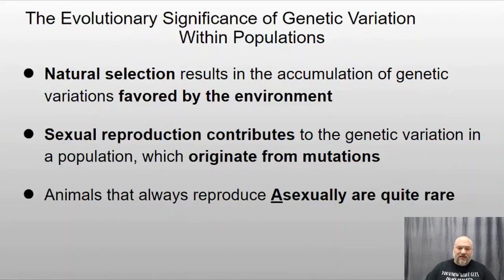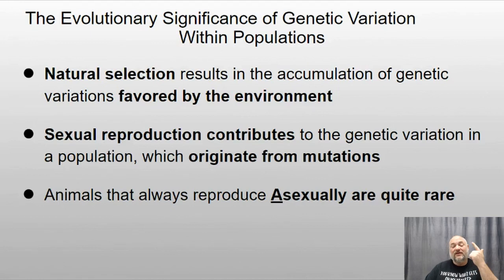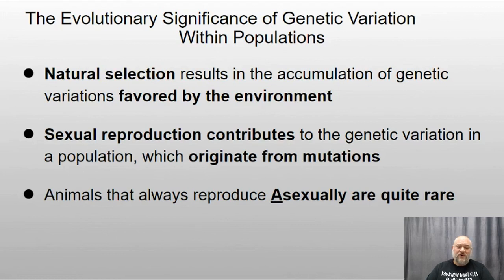How does this connect to evolution? Natural selection results in the accumulation of genetic variations favored by the environment. If a particular combination of genes and alleles helps you survive and pass on more genes — that is, have more offspring — those alleles become more prevalent in the population. Sexual reproduction contributes to the genetic variation of a population, which originally originates from mutations. Even animals that always reproduce asexually are quite rare, and even bacteria that clone themselves can do some crossing over of genetic material.